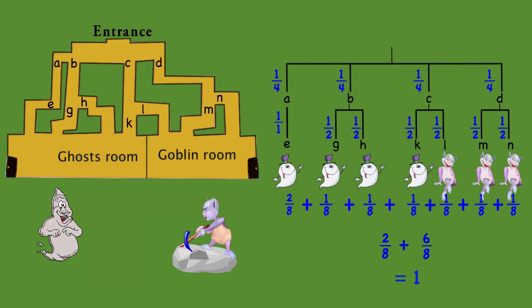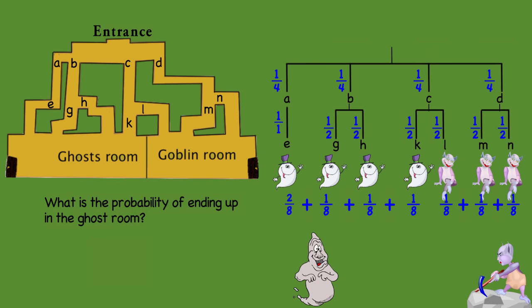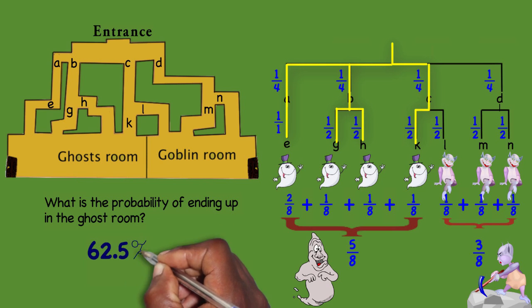A question that you might be asked is, what are the chances of you ending up in the ghost room? Well, you can end up in the ghost room if you take this path, the ghost room if you take this path, this path, even this path. So you have one eighth plus one eighth plus one eighth plus two eighths. You have a five out of eight, which as a percentage, five divided by eight is a 62.5% chance of ending up in the ghost room. And that concludes the example.